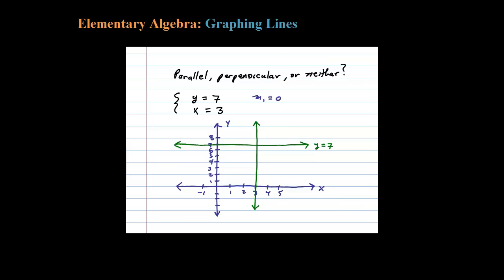So the slope on the horizontal line here, m1, is 0. You could also think of this as y = 0x + 7. But m2, the slope, is undefined. What we notice is that we have a horizontal line and a vertical line, so we can conclude these lines are certainly perpendicular.